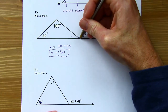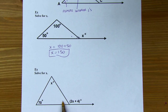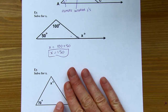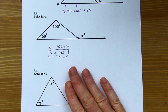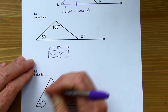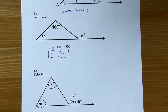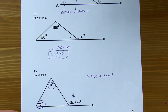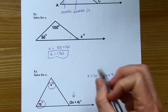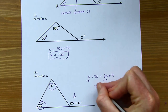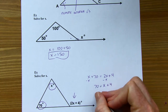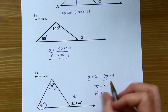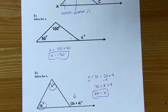In the next example, I don't have enough information to find the missing interior angle directly. But I can identify the remote interior angles and set up the equation: x plus 70 equals 2x plus 4. Subtracting x from both sides and then subtracting 4, x comes out to 66. And that's the end of the section — see you next time.